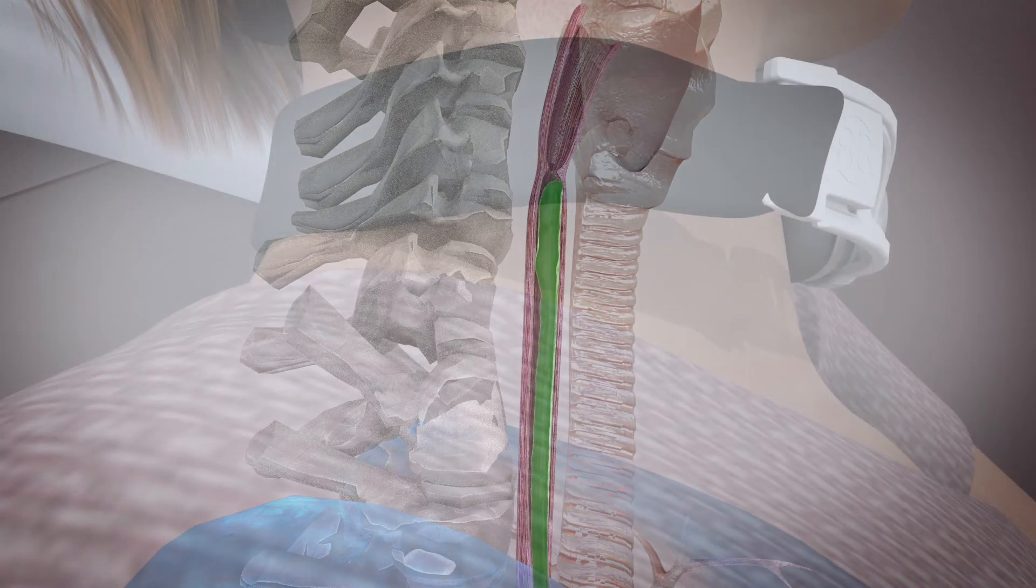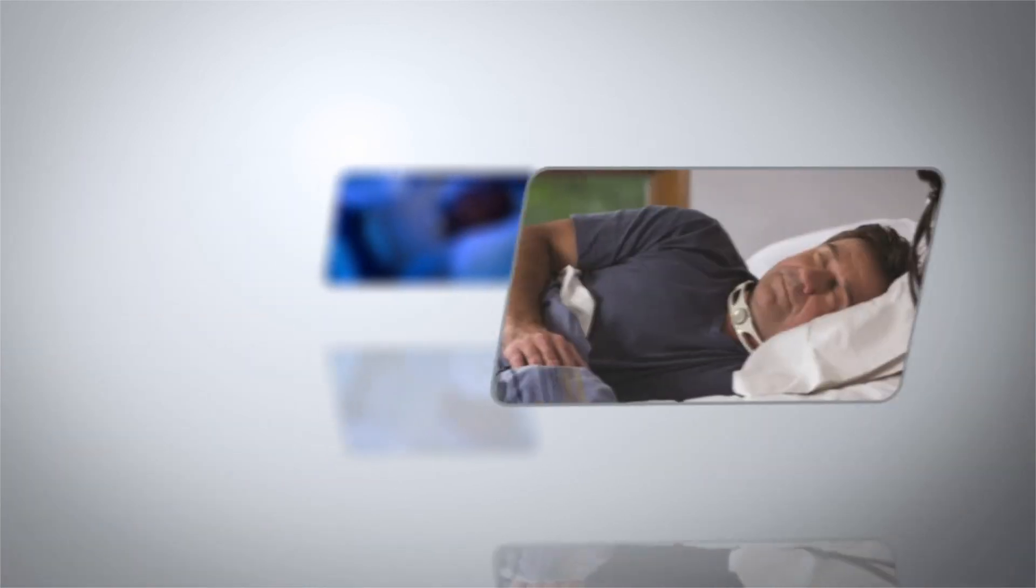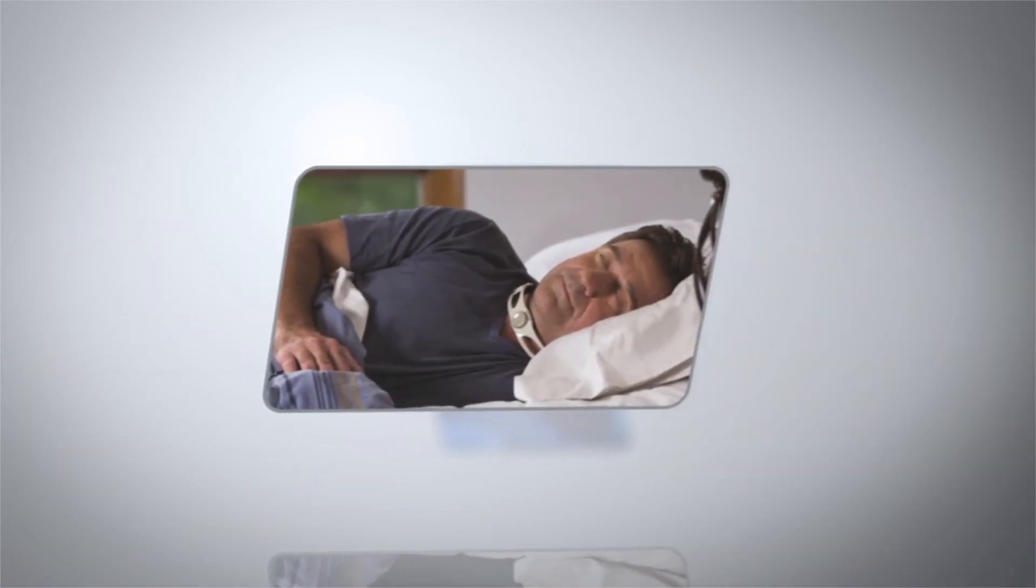Wearing the Razorband at night can help your UES function properly and keep the acid reflux from entering your throat and lungs. The small amount of pressure the Razorband puts on your UES doesn't interfere with normal behaviors, such as coughing and swallowing.